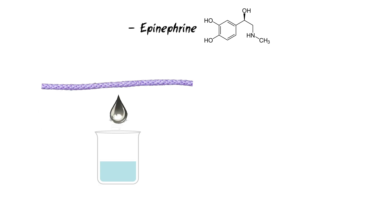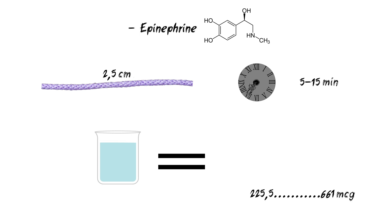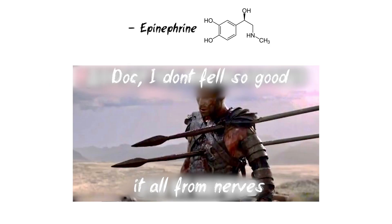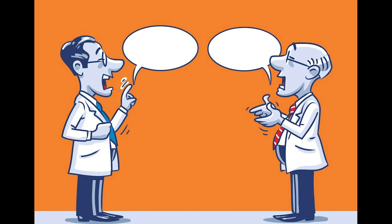Epinephrine should not be used in the treatment of patients suffering from hypothyroidism, diabetes mellitus, and cardiovascular diseases, as well as people taking drugs whose action can be intensified. The amount of epinephrine released into the gingival sulcus from 2.5 centimeters of cord over 5 to 15 minutes ranges from 225.5 to 661 micrograms. Such a volume of epinephrine is contained in three to nine carpules of local anesthetic at a dilution of 1 to 100,000, and is the maximum dose for a fully healthy male.